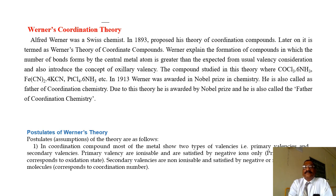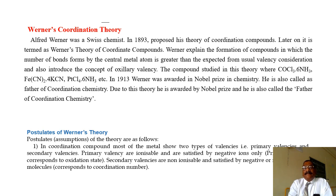Werner explained the formation of compounds in which the number of bonds formed by the central metal atom is greater than expected from usual valency considerations, and also introduced the concept of auxiliary valency. The compounds studied in this theory were CoCl3·6NH3, Fe(CN)2·4KCN, and PtCl4·6NH3. In 1913, Werner was awarded the Nobel Prize in Chemistry.